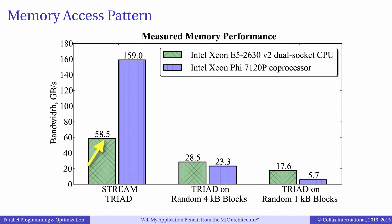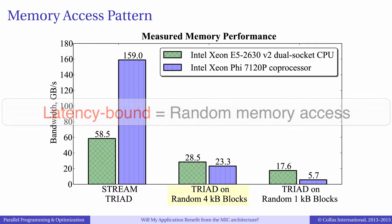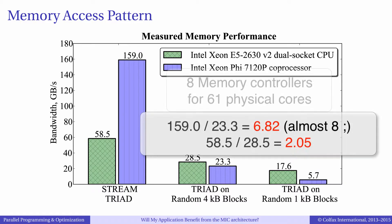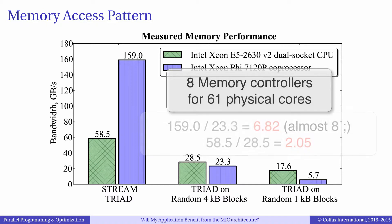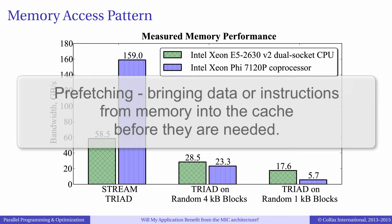Thus, purely bandwidth-bound problems will benefit tremendously from the MIC architecture. However, this is not the case for latency-bound problems. The performance penalty for random access to memory is far more severe on Xeon Phi coprocessors than on Xeon processors. The middle graph illustrates this. Here we performed the STREAM triad bandwidth test on a large number of 4KB arrays scattered around in memory. Each thread would read and write a 4KB array and then jump to a random location in memory to another 4KB array. Although in this test both architectures get a performance penalty, Xeon Phi coprocessor takes an 8x performance hit compared to 2x for Xeon processor. This is because there are 8 memory controllers serving all 61 cores and the prefetchers can no longer operate at maximum efficiency — for every new 4KB array, they cannot guess where the data should be prefetched from.